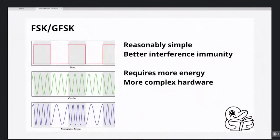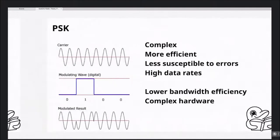Frequency shift keying (FSK), or GFSK — both use frequency shifting. What it means is that you have some center frequency and then a deviation frequency. Your transmitter is switching between those two frequencies. When you look at the signal on a spectrum analyzer, you will actually see two peaks, and you can see it jumping back and forth. Quite easy to detect.